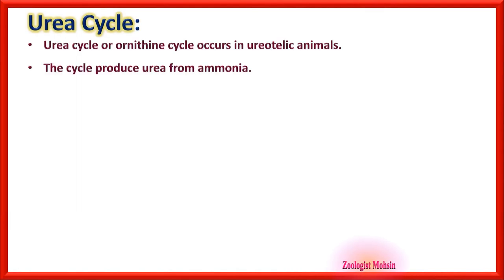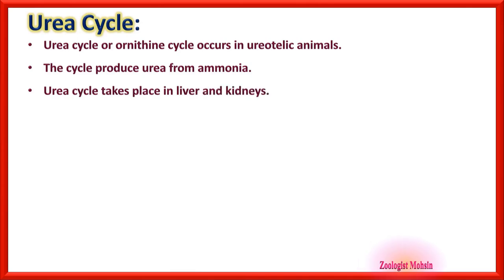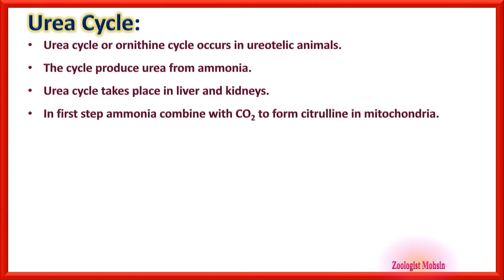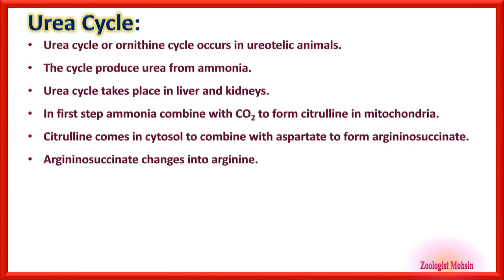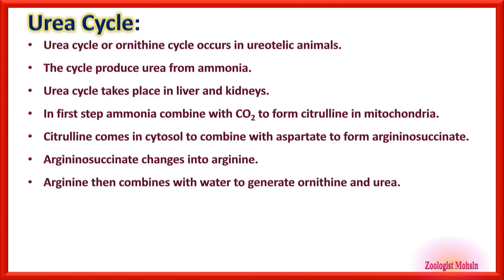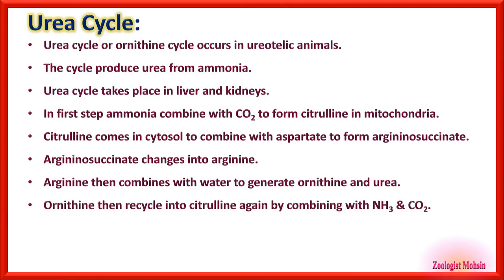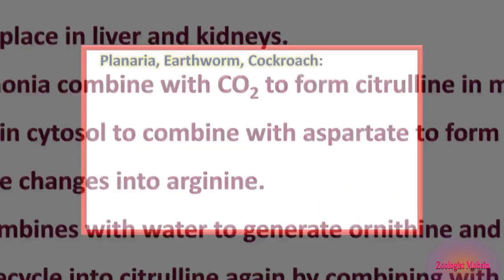The urea cycle, or ornithine cycle, occurs in ureotelic animals and produces urea from ammonia, taking place in the liver and kidneys. First, ammonia combines with carbon dioxide to form citrulline in mitochondria. Citrulline comes into cytosol to combine with aspartate to form argininosuccinate. Argininosuccinate absorbs another ammonia molecule and changes into arginine by the enzyme arginase. Arginine combines with water to generate ornithine and one molecule of urea. Ornithine then recycles into citrulline again.